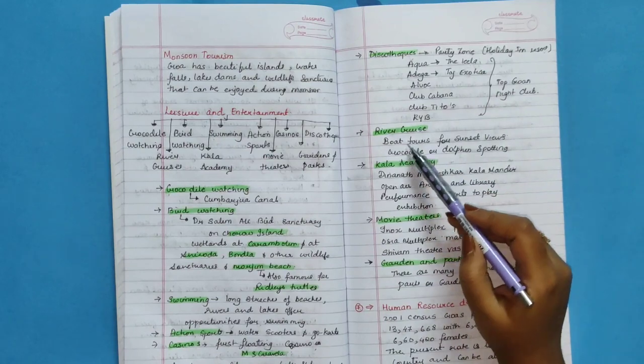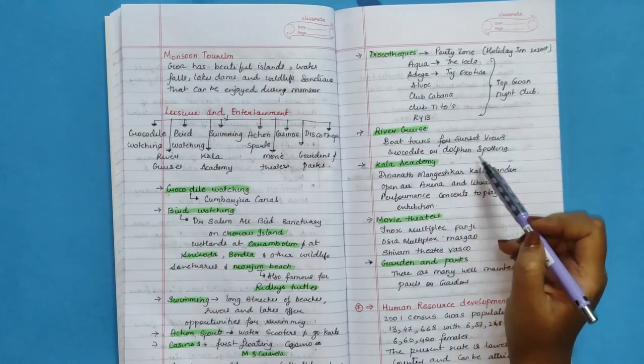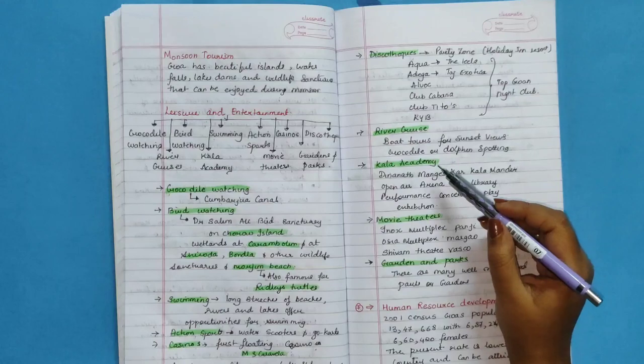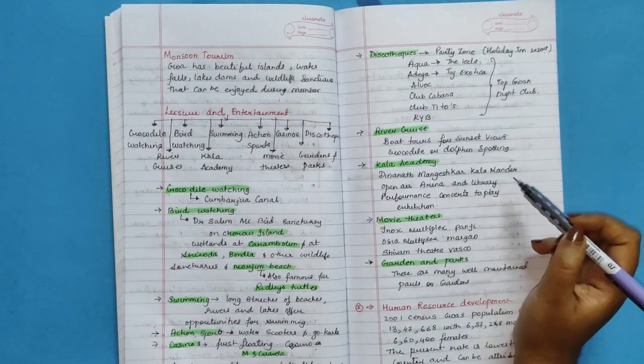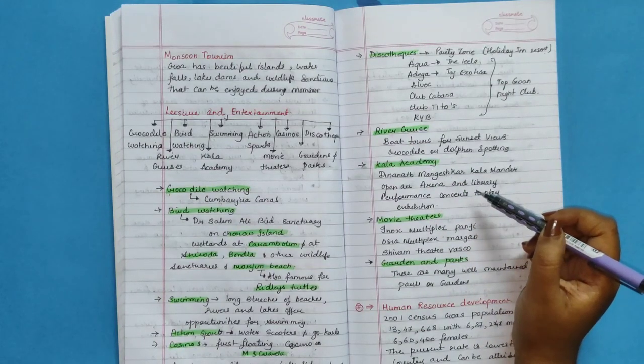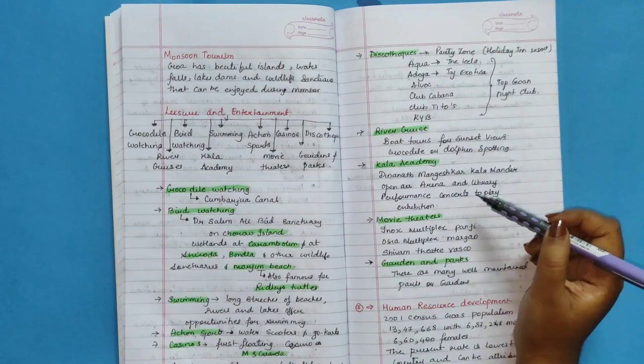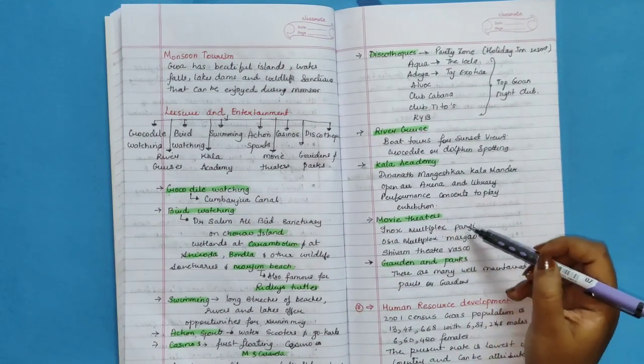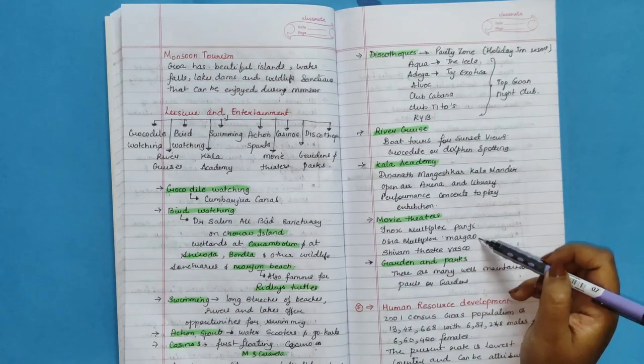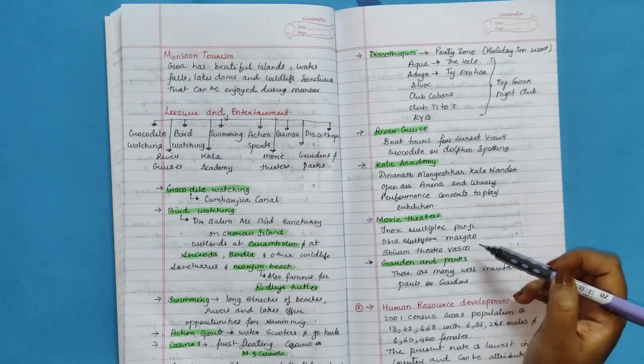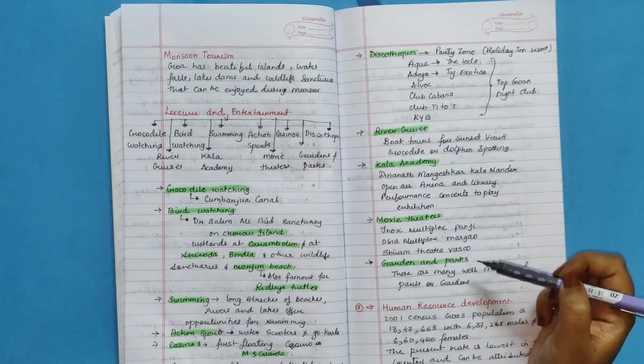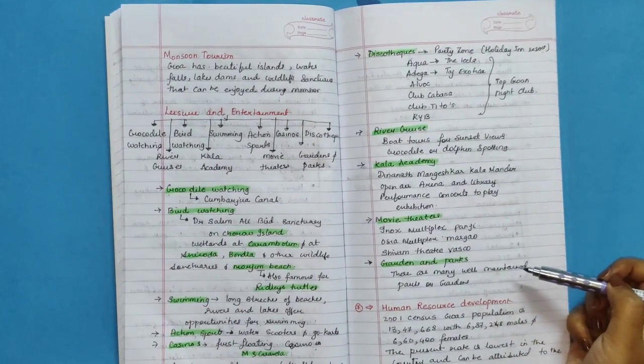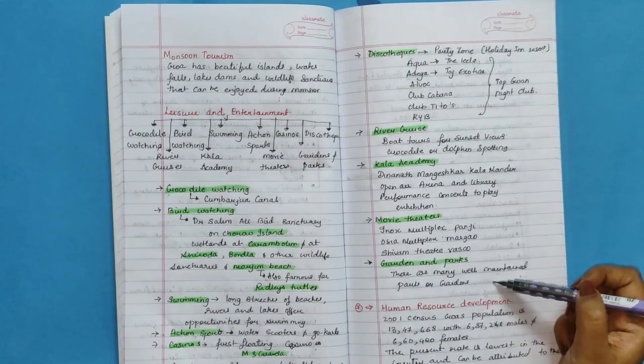River cruise: boat tours for sunset views, crocodile or dolphin spotting. Kala Academy, Dinanath Mangeshkar Kala Mandir, open air arena and library, performance concerts to plays, exhibitions. Movie theatre: INOX Multiplex Panjim, Ashok Multiplex Margao and Shivam Theatre Vasco. Garden and parks: there are many well-maintained parks and gardens.